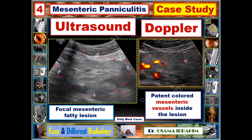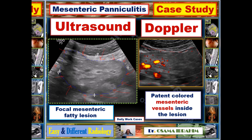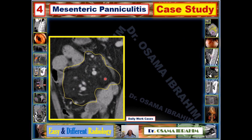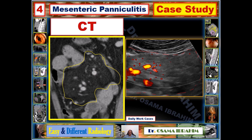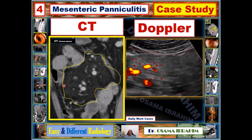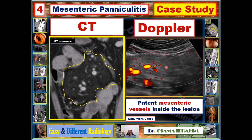These patent vessels represent mesenteric veins. CT was performed to exclude a mesenteric mass, and I found mesenteric fatty lesions with vessels inside, consistent with the Doppler study performed as the initial examination. A fatty lesion in the mesentery with patent vessels inside is representative and diagnostic for mesenteric paniculitis.